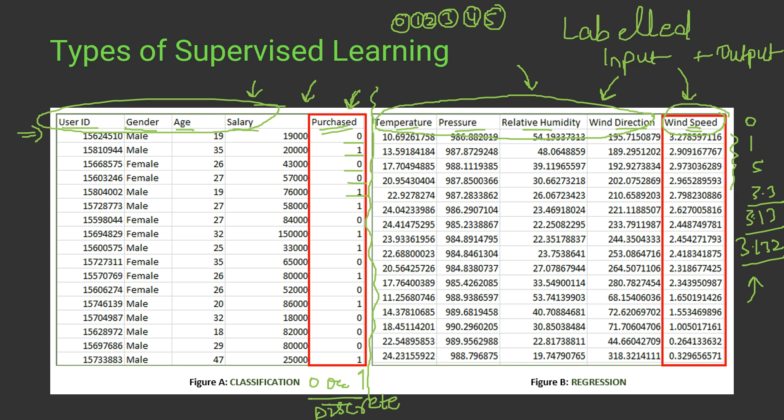In classification, the dataset is discrete, while in regression the output is in continuous form. That is why we have two different types: classification and regression — but both are supervised, as we are given the labels.